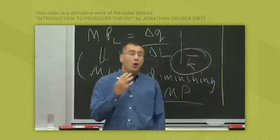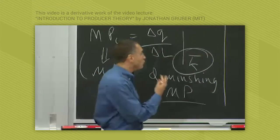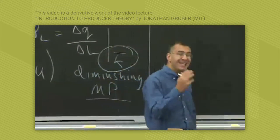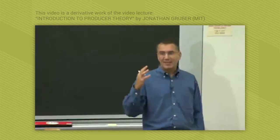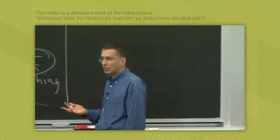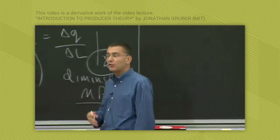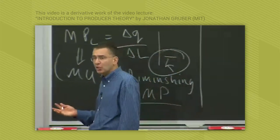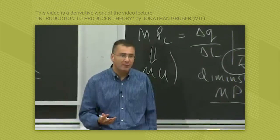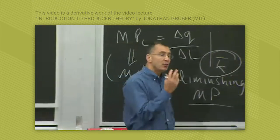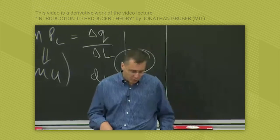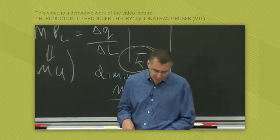The long-run production theory uses basically the same mechanics as utility theory. There's a production function, you have two inputs, and you trade them off — just like you're a consumer with two goods to consume and you trade them off.